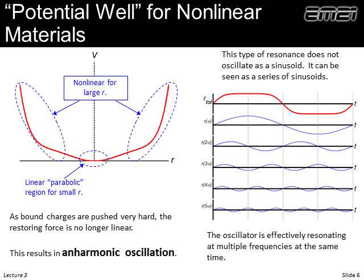All materials are actually nonlinear, so it's not even a correct question to ask which materials are nonlinear. Some materials show nonlinear properties sooner or with weaker electromagnetic fields — those are the ones we tend to call nonlinear — but fundamentally everything is nonlinear.